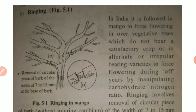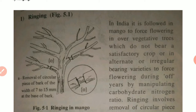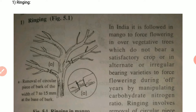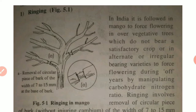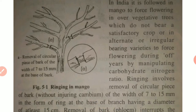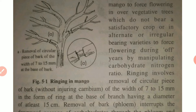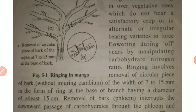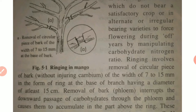Good morning friends. In the previous lecture we have seen some special practices in fruit crops, that is bahar treatment. Besides bahar treatment, there are some other special practices like ringing, which we have also seen in the previous lecture. Ringing is the removal of bark or phloem so that the flow of carbohydrates from shoot system to root system is avoided, but the flow of nitrogen through xylem is continued, so that the ratio of carbohydrate to nitrogen is maintained and the setting of flowers and fruits is maintained.